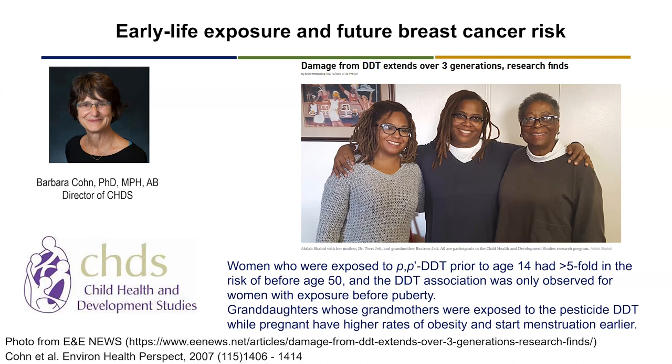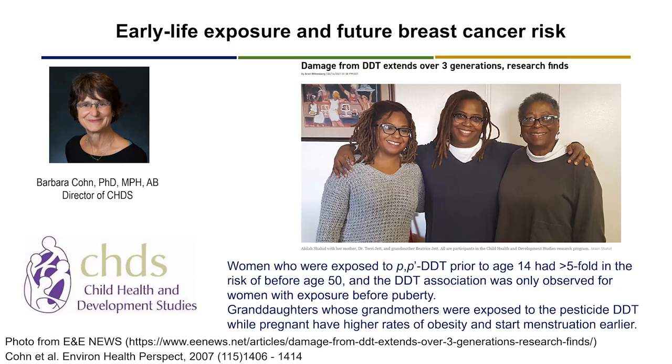One of the exciting studies we had was through collaboration with the Child Health and Development Studies. Barbara Cohn was the director of CHDS. In this three-generation study, Barbara's team initially found that women who were exposed to a certain chemical called DDT before age 14 had increased risk of breast cancer in their later life. This association is only significant if the exposure occurred before puberty, indicating some connection between early life exposure and later life cancer rate.